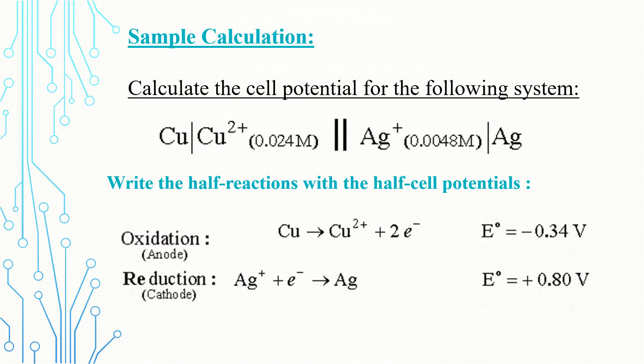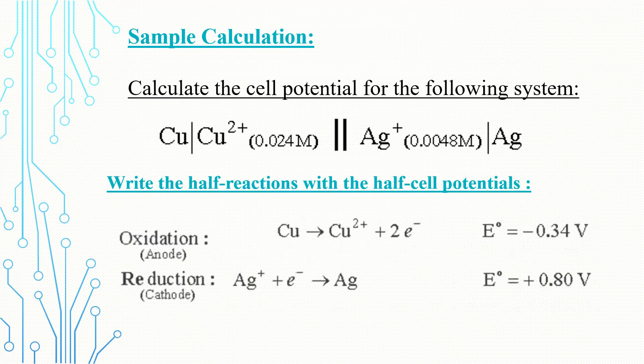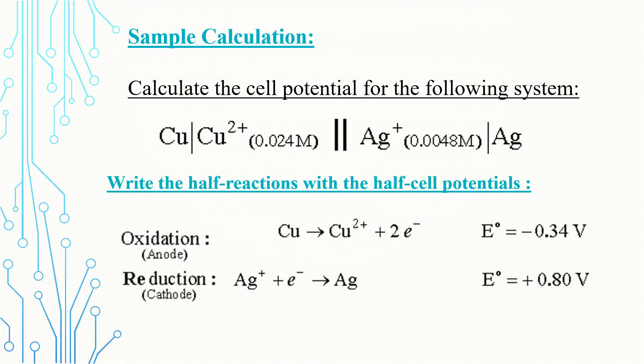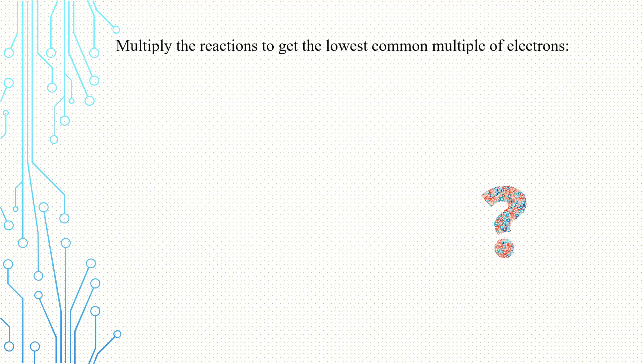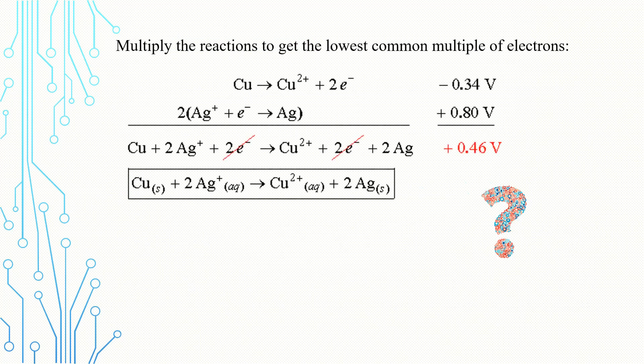By writing the shorthand notation method, it appears as the following: the copper metal loses two electrons and changes into copper ions, and silver ions gain one electron to change into silver metal. In a redox system, the number of electrons entering must equal the exiting electrons. The copper lost two electrons, while silver gained one electron, so we must multiply the silver half cell by two.